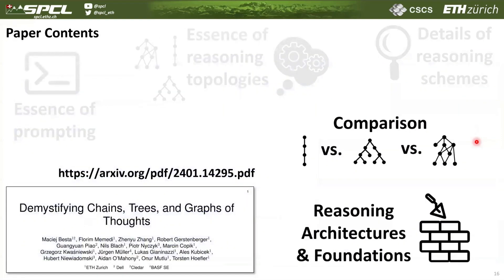We finalize with taking a more foundational look at the differences between not just specific chain, tree, or graph schemes, but differences between these three classes of schemes — what are the fundamental differences between chains, trees, and graphs of thoughts. We also describe different aspects related to the reasoning architectures and foundations, such as things like scalability, parallelism, programmability, and theoretical foundations.